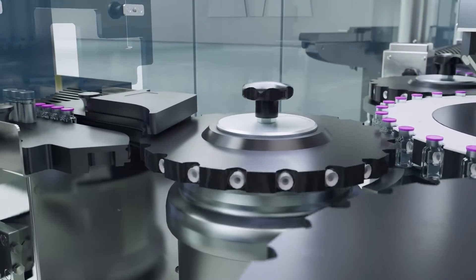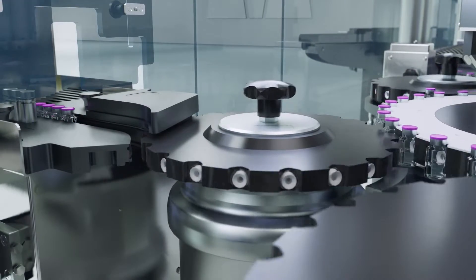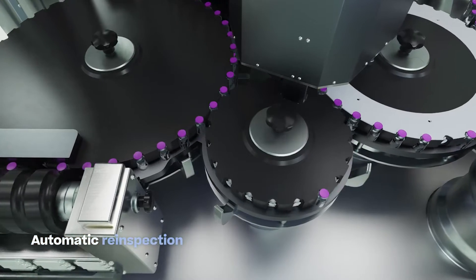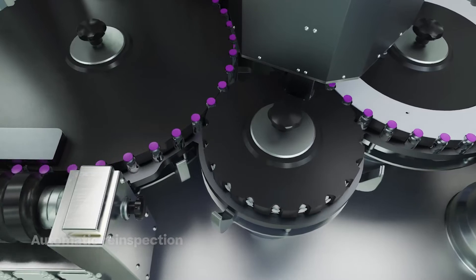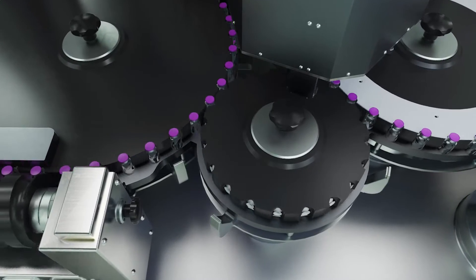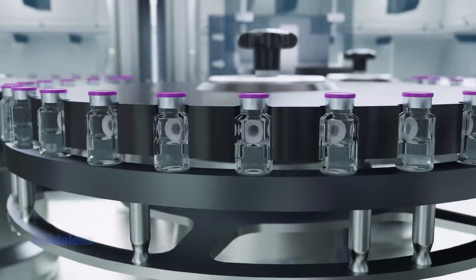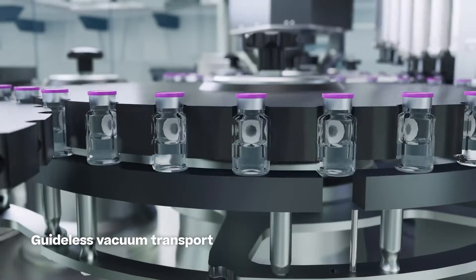If the inspection result deviates in predefined scenarios, the machine automatically recirculates the product for a final decision within the same inspection process. A guideless vacuum transport system ensures smooth handling of products throughout the entire machine.